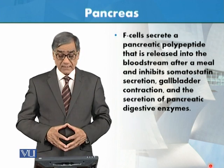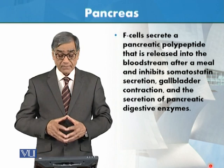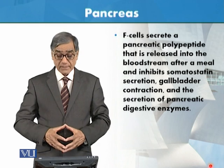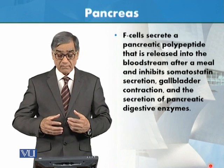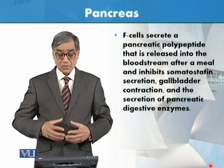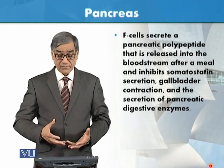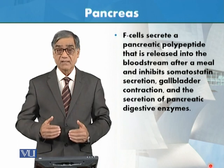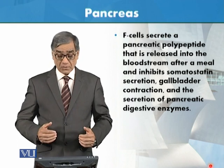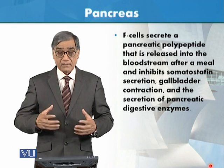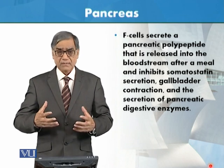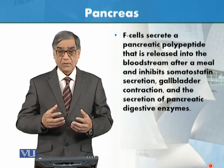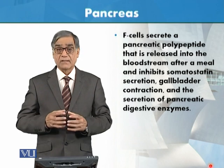F cells secrete a pancreatic polypeptide that is released into the bloodstream after a meal. It inhibits somatostatin secretion and gallbladder contractions, as well as the secretion of pancreatic digestive enzymes. The gallbladder contains bile, which plays an important role in fat digestion.